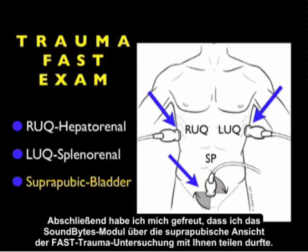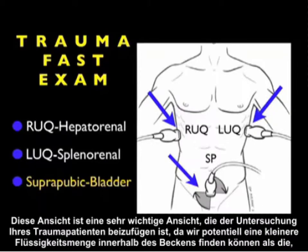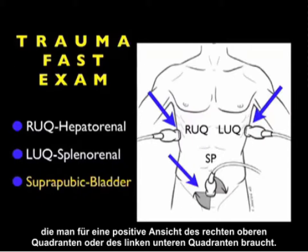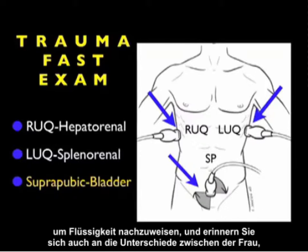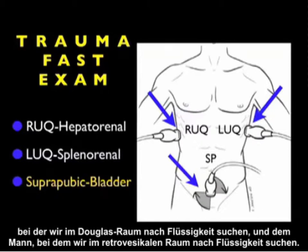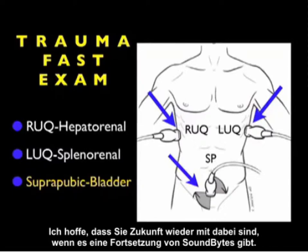In conclusion, the SoundBytes module covering the suprapubic view of the trauma FAST exam is a very important view to add to the exam of your trauma patient, as we can potentially detect a smaller amount of fluid here within the pelvis than it takes to make a positive right upper quadrant or left upper quadrant view. Remember this is a two-step exam — we look in both short and long axis configurations to verify fluid. Also remember the differences between the female, where we're looking into the pelvic cul-de-sac, and the male, where we're looking into the retrovesical space.